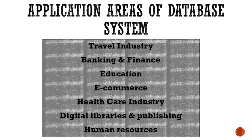Digital library and publishing also uses DBMS. Whichever book has been taken by someone, or whether that book is available right now — that is stored and managed by DBMS. DBMS also manages a very huge amount of text and multimedia data. Human resources — in organizations or industries, DBMS is used for storing information about employees, salaries, benefits, profits, losses, taxes, and for generating salary checks. These are the areas where DBMS is used. Basically, DBMS or database systems are used everywhere.